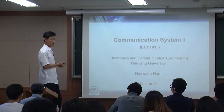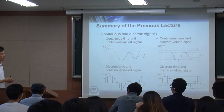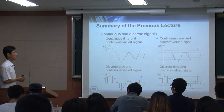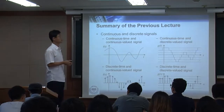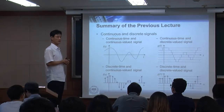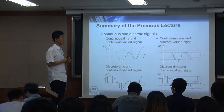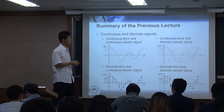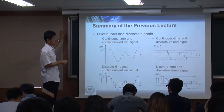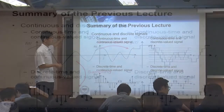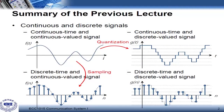Let's recap what we learned last week. We discussed continuous and discrete signals. This is the second class of the review of basics of signals and systems. A continuous signal is called analog, and at the bottom we see discrete time and discrete value signals, which we call digital signals.